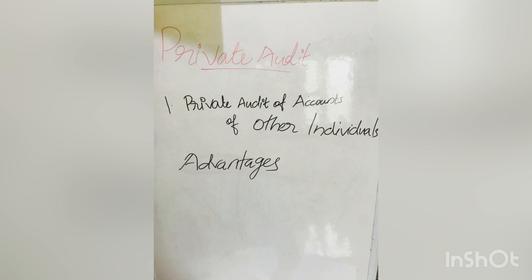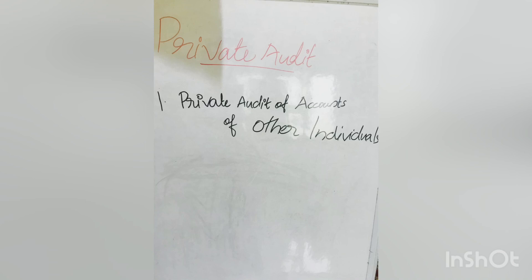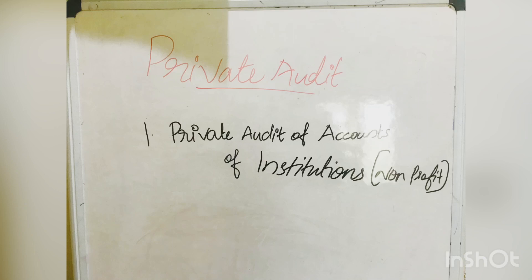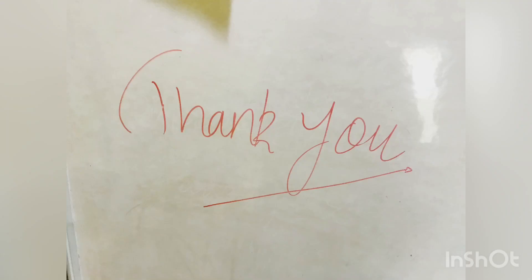The income tax authorities also insist that a professional auditor should audit the accounts. The fourth type of private audit is the audit of institutions, which includes non-profit institutions. There are certain institutions working not for earning profit — they are non-profit organizations like hospitals, schools, colleges, associations, clubs and libraries, which have large receipts and huge expenditures. It is not compulsory to get their accounts audited, but it is necessary to audit the accounts to assure members that the accounts are maintained properly. This helps to detect frauds and irregularities committed by office bearers and employees, and further helps in obtaining government grants and other assistance on the basis of audited accounts. These are the major types of private audit.